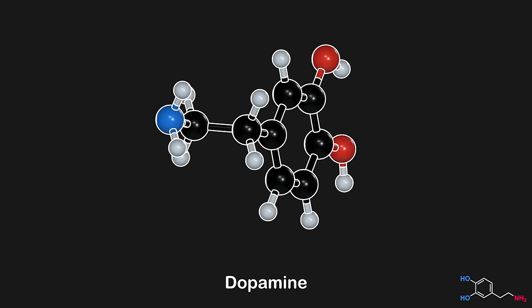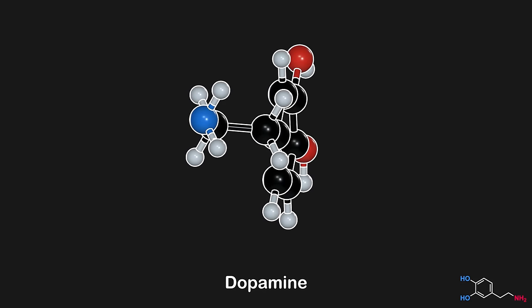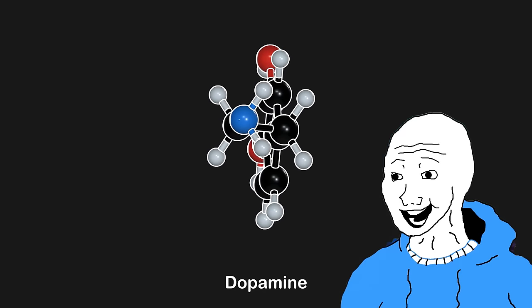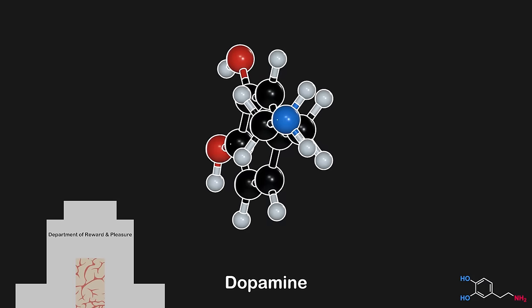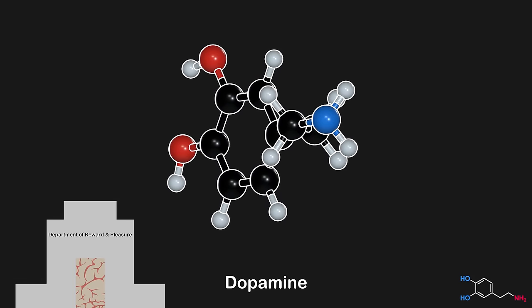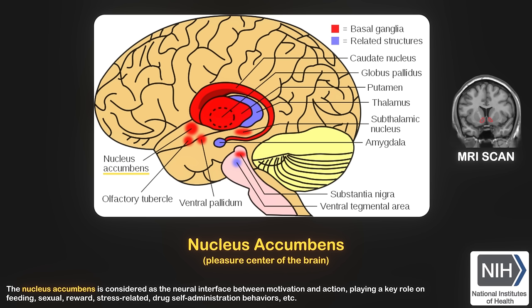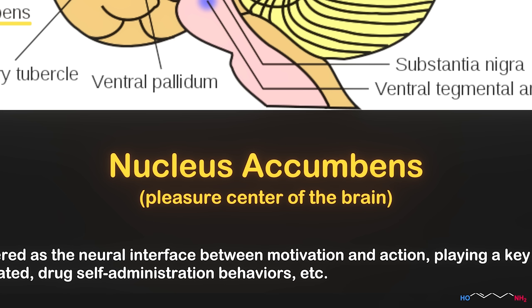When we partake in rewarding experiences, dopamine is released, activating dopamine receptors, leading to increased neuron firing, which induces a positive, uplifting mood. The epicenter of reward and pleasure in the brain involves several key structures, most prominently in the nucleus accumbens, which is often referred to as the pleasure center of the brain.